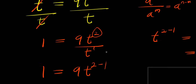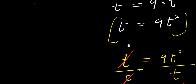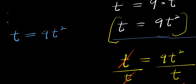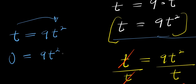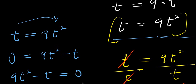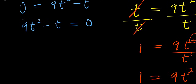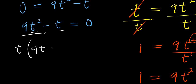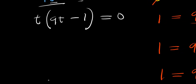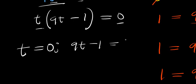We can also form a quadratic equation from this point. I have t equals 9t squared. I move t over to get 0 equals 9t squared minus t, that means 9t squared minus t equals 0. To solve for t, I factor out t: t times (9t minus 1) equals 0. From here I equate each factor to zero: t equals 0, or 9t minus 1 equals 0.